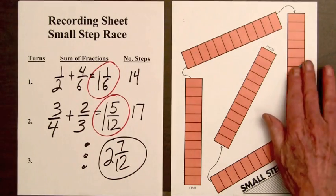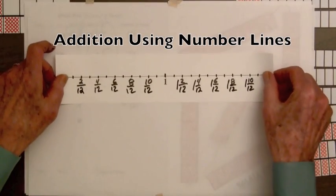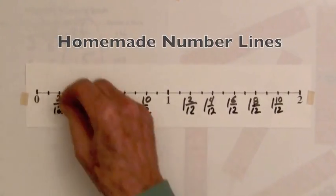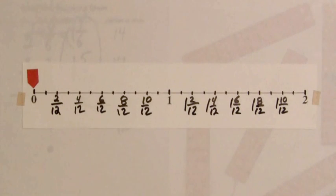The students will each have their own number line from step three of basic concepts. And they can put markers on that number line to indicate the sum of two fractions.